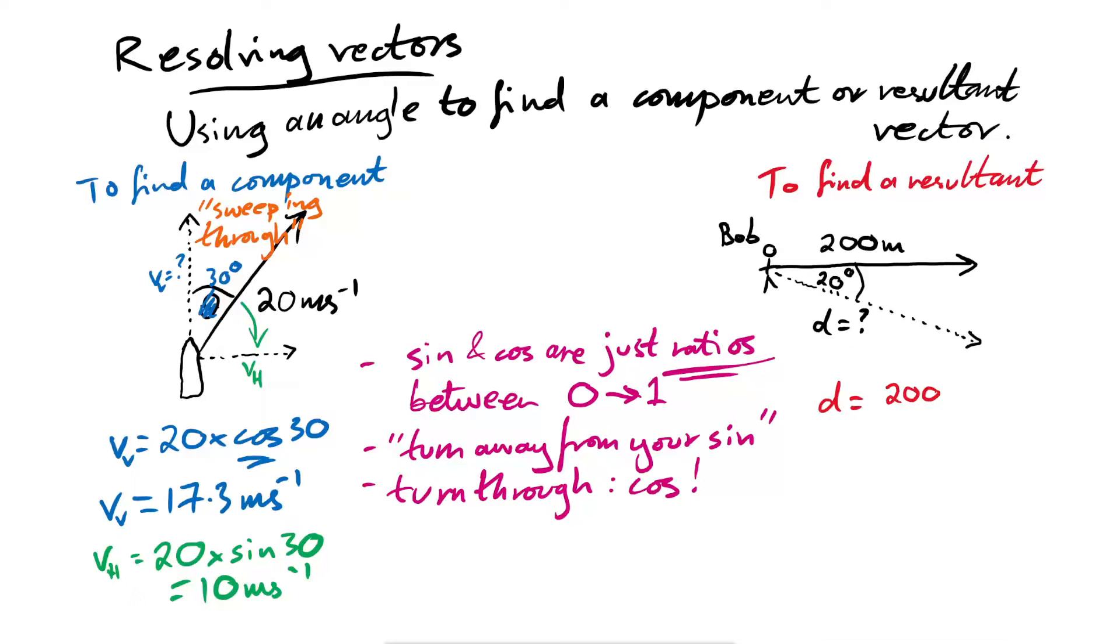So Bob checks his compass, he sees that he's walked at an angle of 20 degrees, and he wants to know how far he's walked. But we know he's travelled further. So therefore, we're not going to times by this ratio between zero and one, we're going to divide by this ratio instead. Are we going to use cos or sine? Well, let's remember our rule, turn away from your sin. We're not turning away, the angle is between in this case, so we're going to use cos instead. So divide by cos 20. And that will give you a bigger number than 200. So it turns out that he's walked a little bit further, 213 metres.